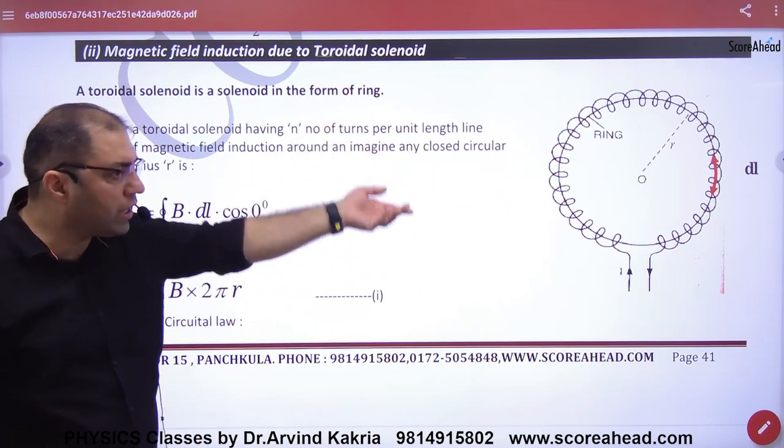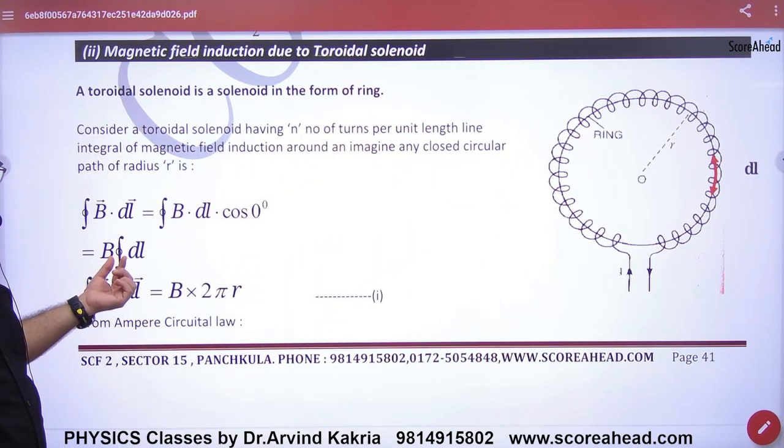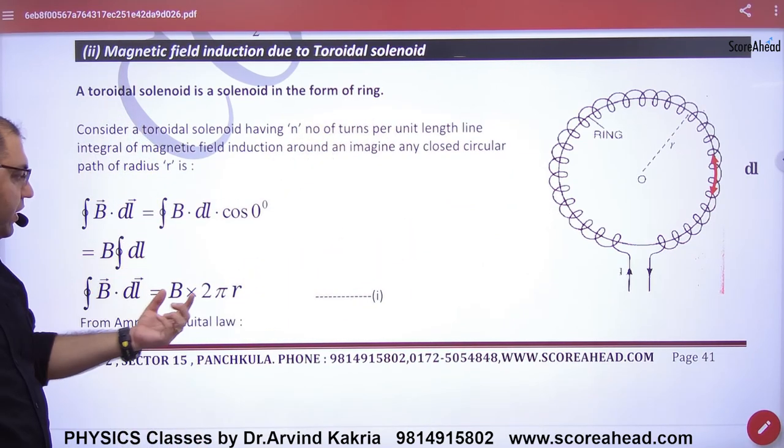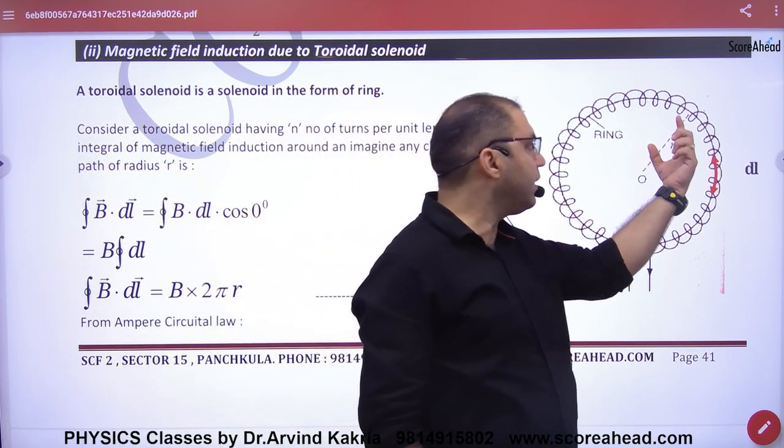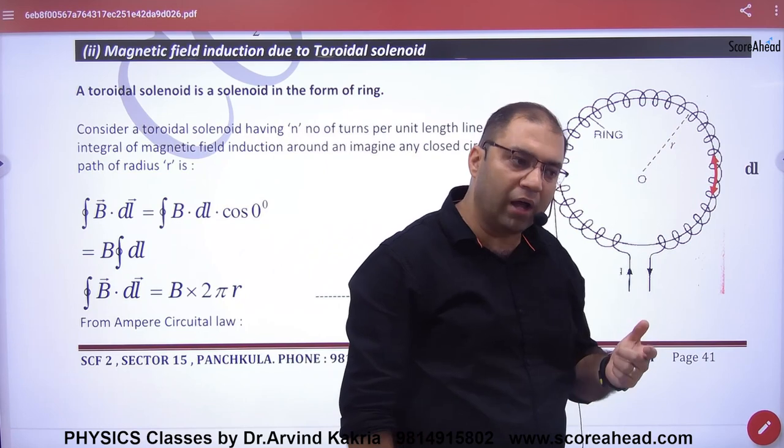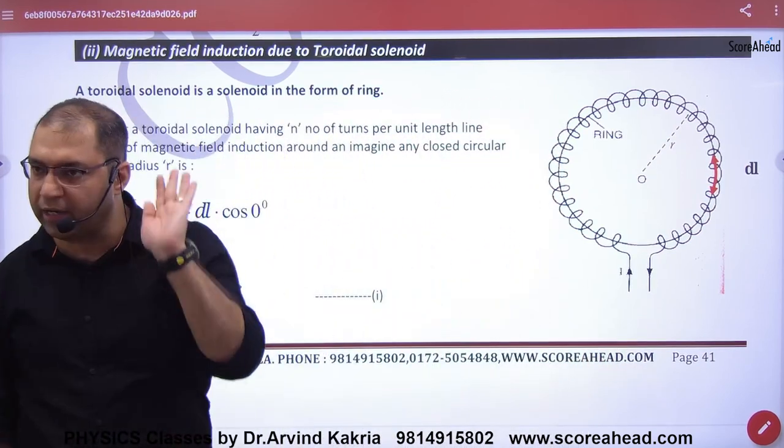If we do this, then total B dot DL equals B outside times integration of DL, which is 2πR. So imagine you have the imaginary closed path with radius R. B into 2πR, clear.